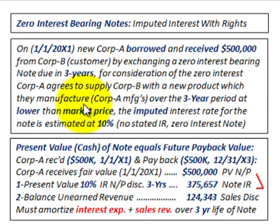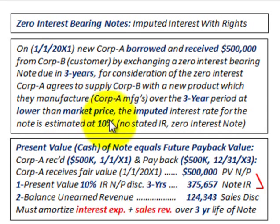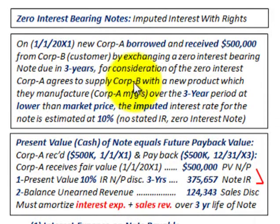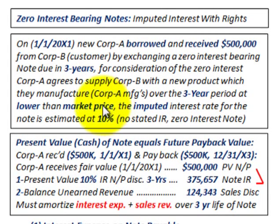Over the three-year period where this note is outstanding, Corporation A is going to offer Corporation B a lower than market price on this product that they're supplying to them. The imputed interest rate for the note is estimated at 10%. There's no stated interest rate on the note because it's a zero interest bearing note, but there's an imputed rate of 10%. So what we're going to have to do is determine the present value of this note.